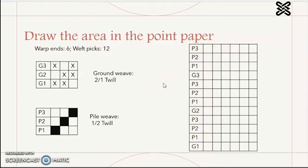And we need to design what ground weave and pile weave is used. For here, the ground weave is 2/1 twill. And we use a cross to represent the ground weave. When you see the cross, it means the ground weave is under the warp end.